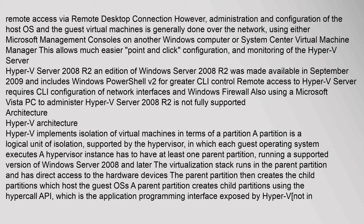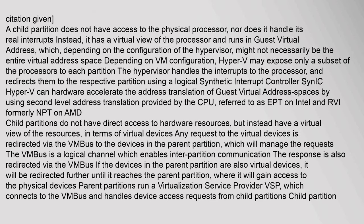Hyper-V implements isolation of virtual machines in terms of a partition. A partition is a logical unit of isolation, supported by the hypervisor, in which each guest operating system executes. A hypervisor instance has to have at least one parent partition running a supported version of Windows Server 2008 or later. The virtualization stack runs in the parent partition and has direct access to the hardware devices. The parent partition creates child partitions which host the guest OSes, using the Hyper-Call API — the application programming interface exposed by Hyper-V. A child partition does not have access to the physical processor.